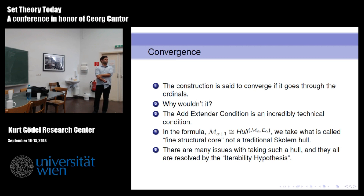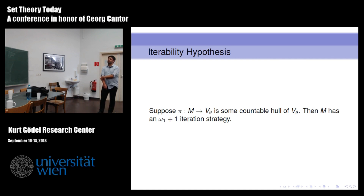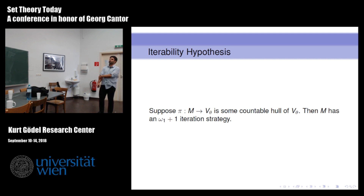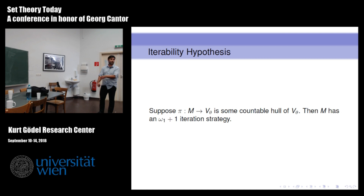So what is the iterability hypothesis? It's going to be something like the ω₁-iterability in the first case I was outlining. The iterability hypothesis: suppose you have a countable hull of some initial segment of V, then M has an ω₁+1 iteration strategy. You don't really need to know any fine structure to think about this problem - that will be clear when I explain what an iteration strategy is. You can solve the problem of showing that the construction converges without knowing any fine structure.